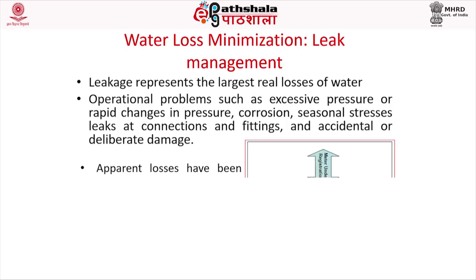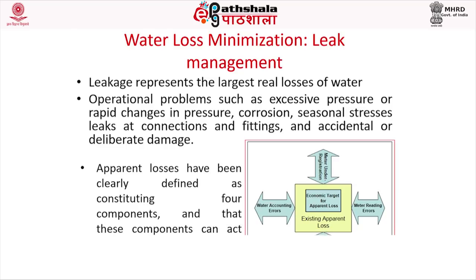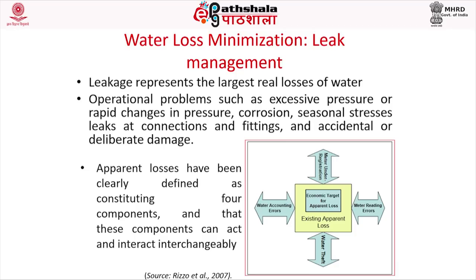Apparent losses have been clearly defined as constituting four components that can interact interchangeably. For example, existing apparent losses are due to water counting errors, meter under-registration, meter reading errors, or water theft.